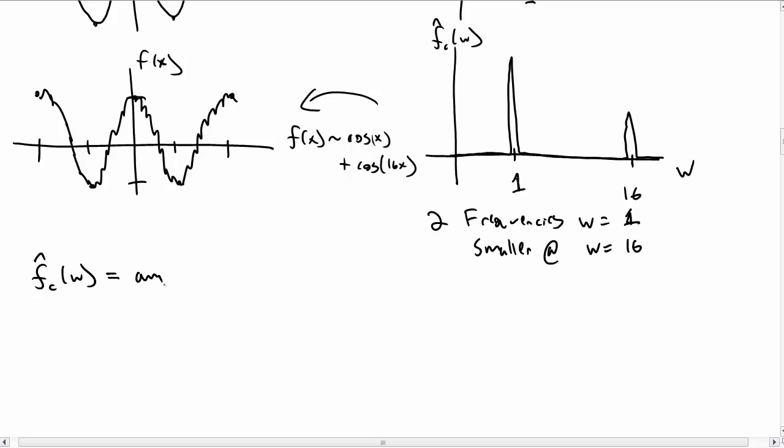So this f̂_c(ω), the Fourier cosine transform, is telling you the amplitudes of the frequencies, the cosine frequencies, that make up f(x).